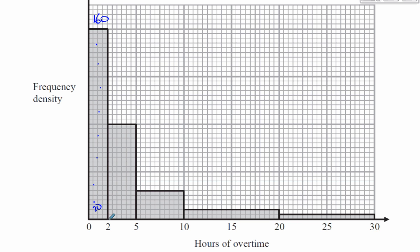The second bar has six squares across. Six times five is 30, so each section is 30 squares. There are four sections, so four times 30 is 120. There are 120 squares in the second bar.